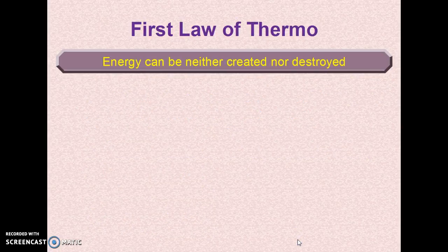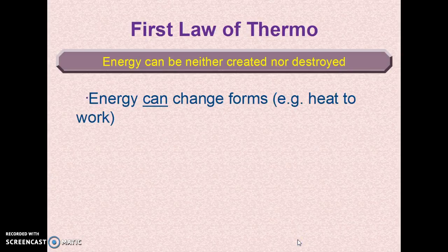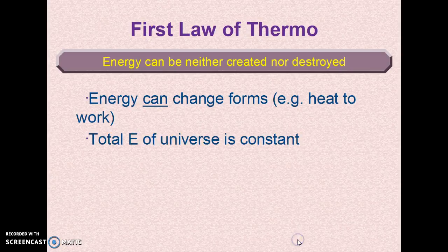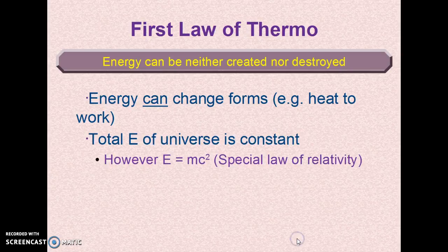The first law of thermodynamics tells us that energy can be neither created nor destroyed. Energy can change forms — for instance, we know and we've worked with problems in which we convert heat to work or work to heat, P delta V. The total energy of the universe is therefore constant. This means we have to understand that matter is a special form of energy. The energy of matter is m times the speed of light squared — from the 1905 special law of relativity.